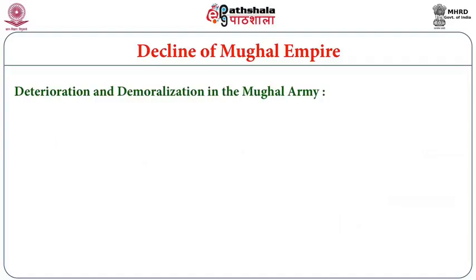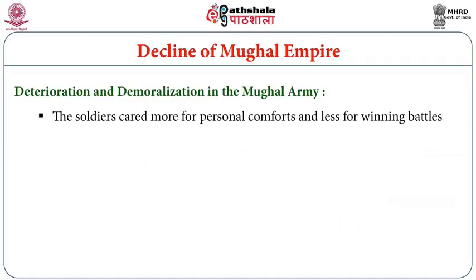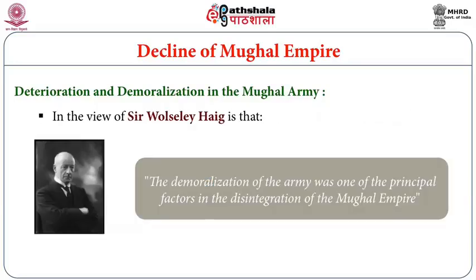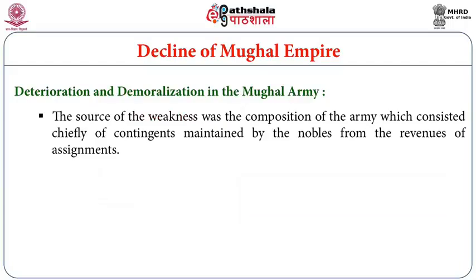The deterioration and demoralization of the Mughal army was equally significant. Soldiers cared more about personal comfort than winning battles. In the words of historian Irvine, almost every fault in the list of military vices may be attributed to the degenerate Mughals: indiscipline, want of cohesion, luxurious habits, inactivity, and cumbersome equipment. Sir Wolseley Haig noted that the demoralization of the army was one of the principal factors disintegrating the Mughal Empire.